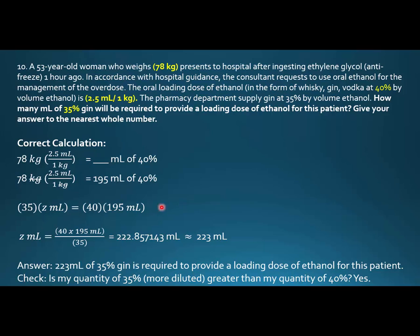Well, this is a little bit tricky. There's two ways to do it. This is the right way. 35 times z mLs, or z mLs, equals 40 times 195 mLs. Normally I'd use x here, but I've been using x as a multiplication sign, so I'm going to use z.